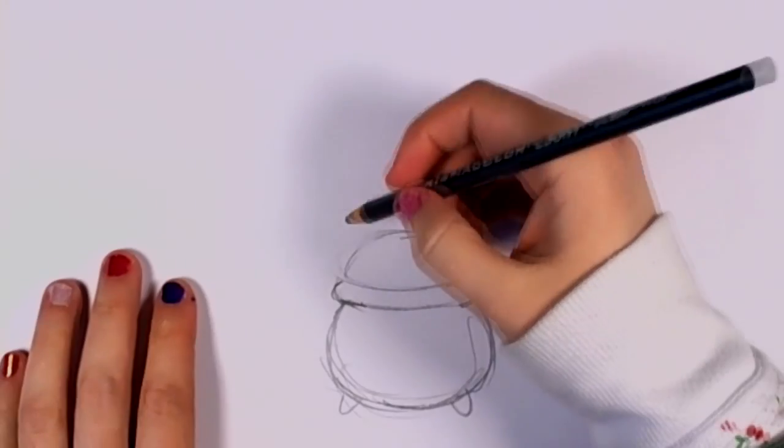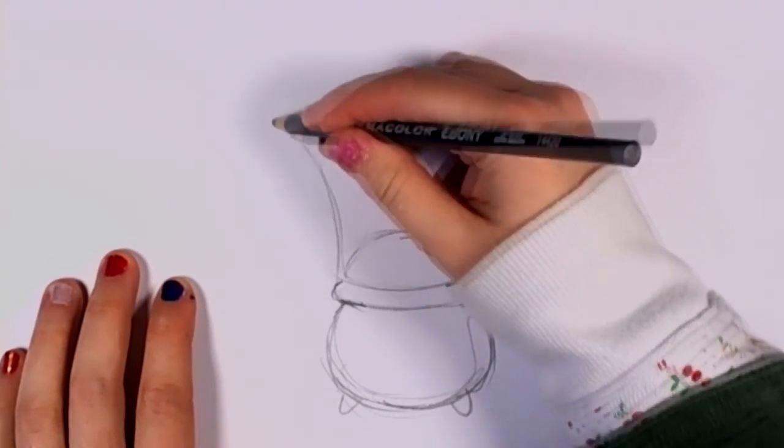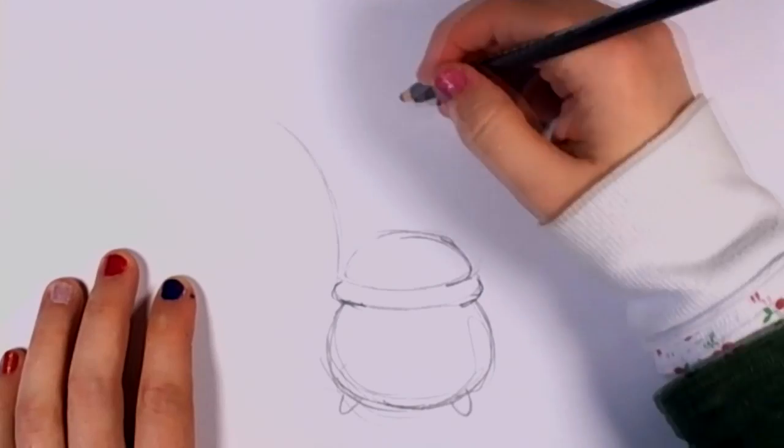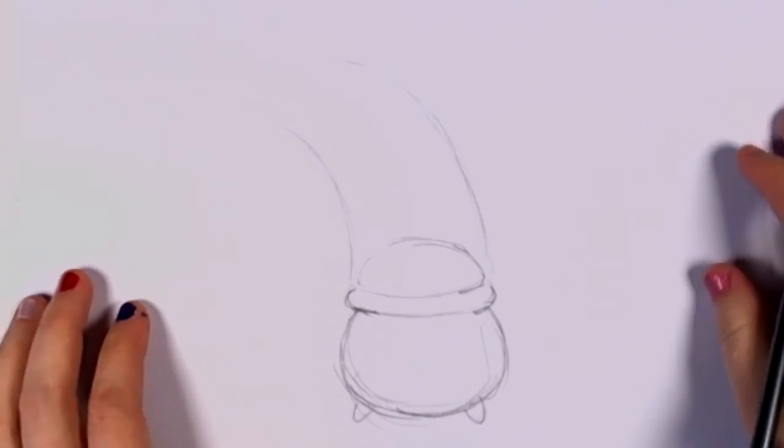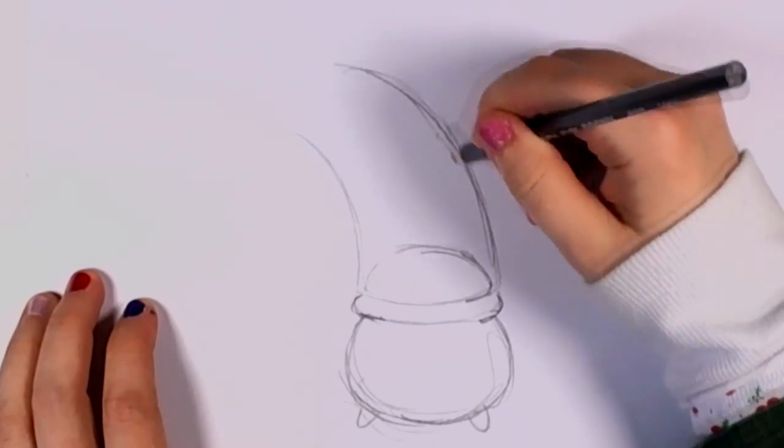So now I'm going to draw the rainbow. Start by drawing two arcs, one on each side of the pot. That's going to be the shape of your rainbow.